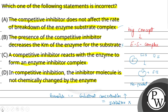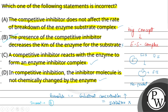Option C: a competitive inhibitor reacts with the enzyme to form an enzyme-inhibitor complex — yes, यह सही है। Option D: in competitive inhibition the inhibitor molecule is not chemically changed by the enzyme — यह भी सही है। तो incorrect statement है Statement B। इस question का सही option है Option B. I hope you understood this question, thank you.